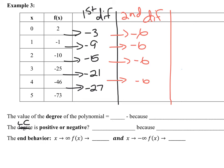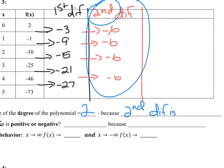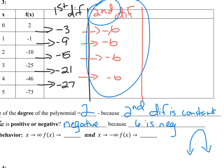For this next one, the first difference didn't have a consistent value, but the second difference did — so the degree is 2, because the second difference is constant. The constant value is negative, so the leading coefficient is negative. Since it's degree 2 with a negative leading coefficient, the graph is an upside-down parabola. As x goes to positive infinity, y goes to negative infinity, and as x goes to negative infinity, y also goes to negative infinity.